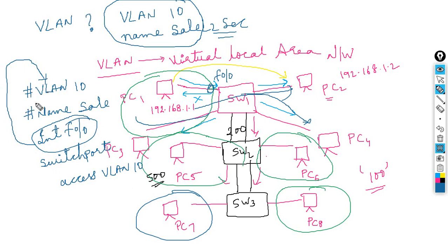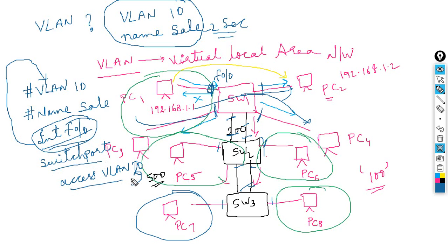To revise: VLAN stands for Virtual Local Area Network and divides a single broadcast domain into multiple broadcast domains. By default, all switch ports belong to VLAN 1. To move a port to a different VLAN, go under the interface and use the 'switchport access vlan' command with the desired VLAN number.